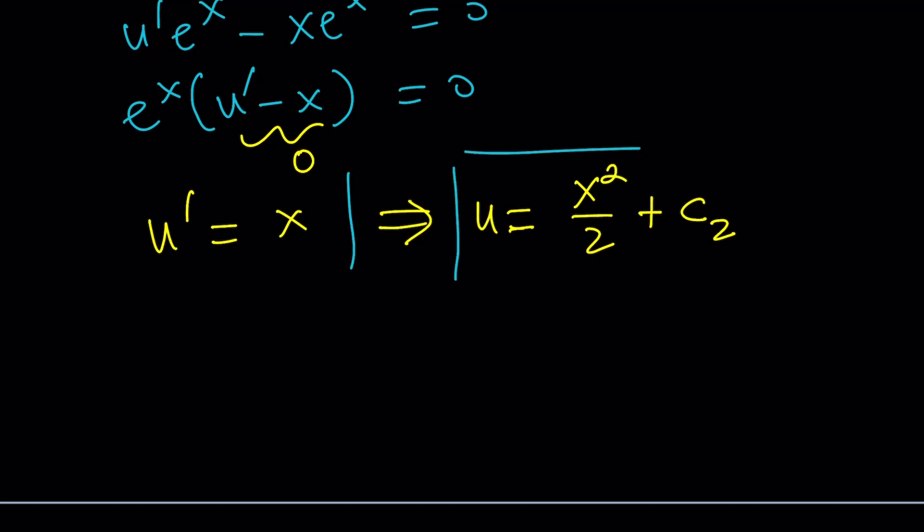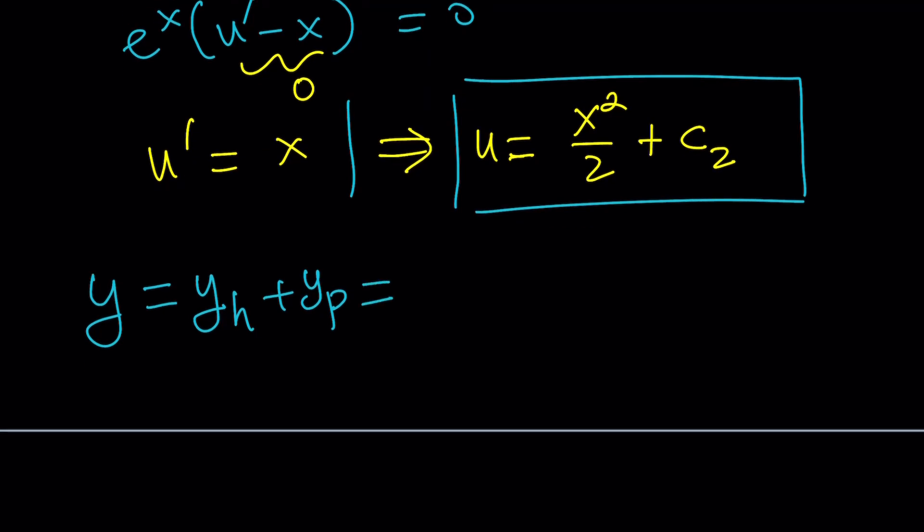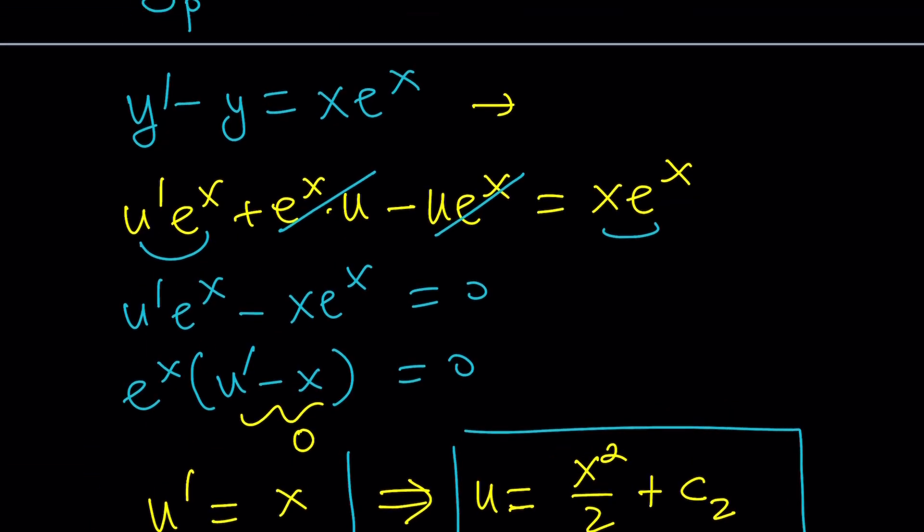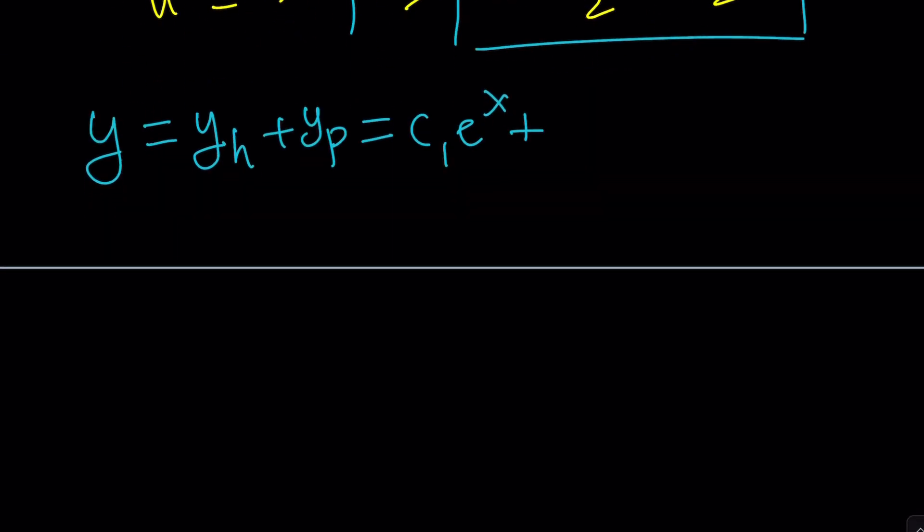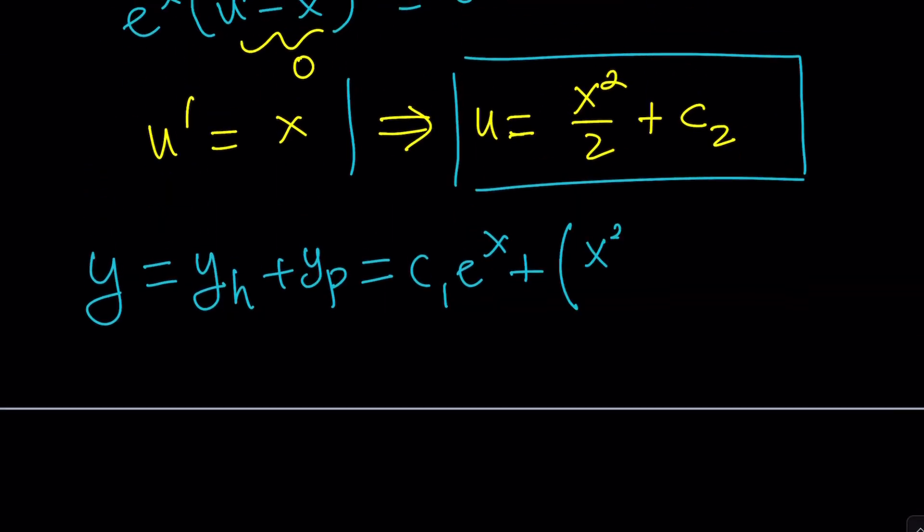Let's go ahead and save that. Now, what are we going to do next? We're going to go ahead and plug it in and get the solution. The general solution is basically going to be y homogeneous plus y particular. And y homogeneous, we already knew that c sub one e to the x. And the particular solution is u e to the x. So, we're going to multiply this by e to the x.